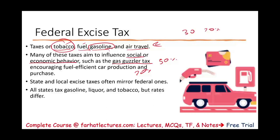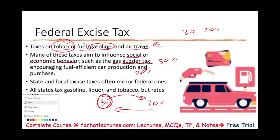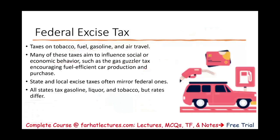Because of these rate differences, some people go to a state where tobacco taxes are lower — say 3% or 5% — buy tobacco there, transport it back, and sell it in their state where the taxes are higher, like New York. That's illegal, but it happens in the real world due to the significant price differences created by varying excise tax rates.